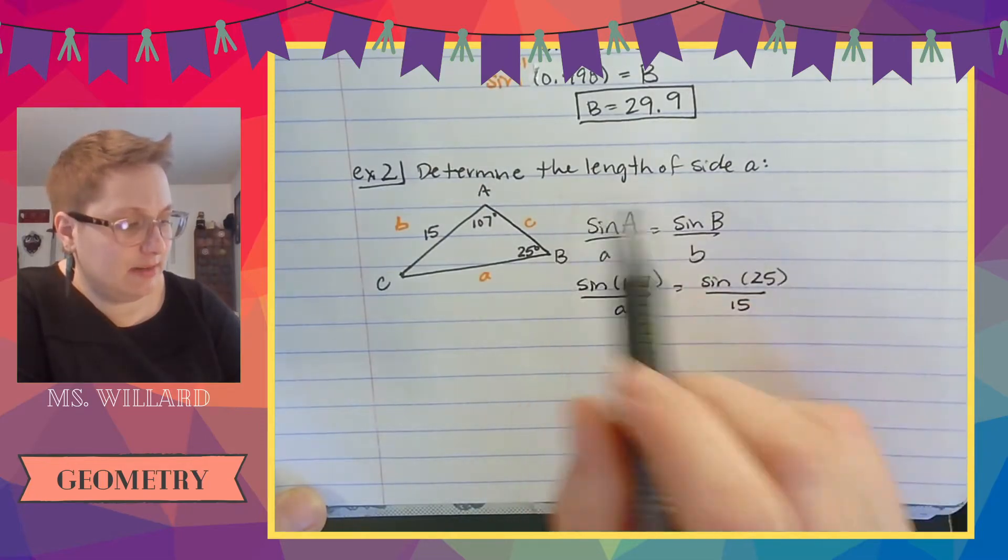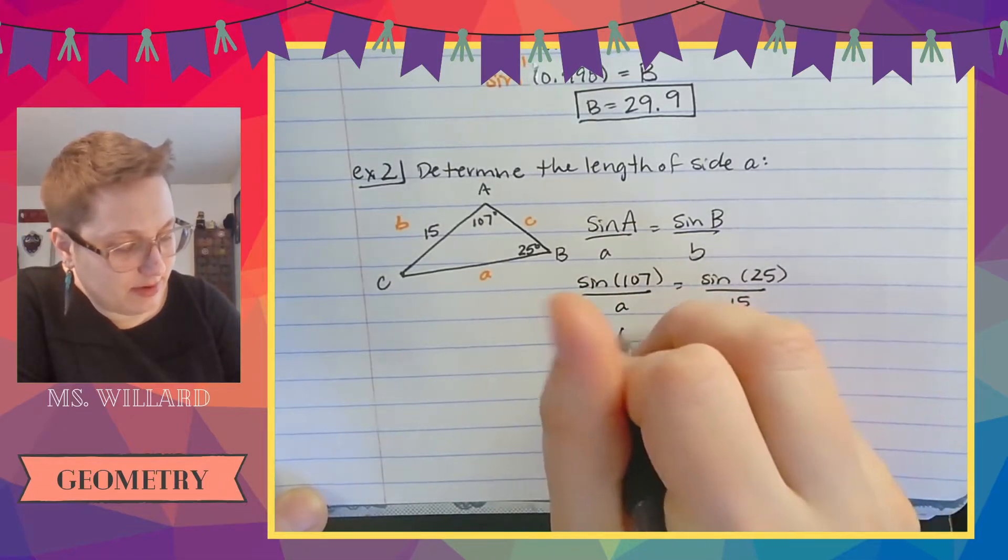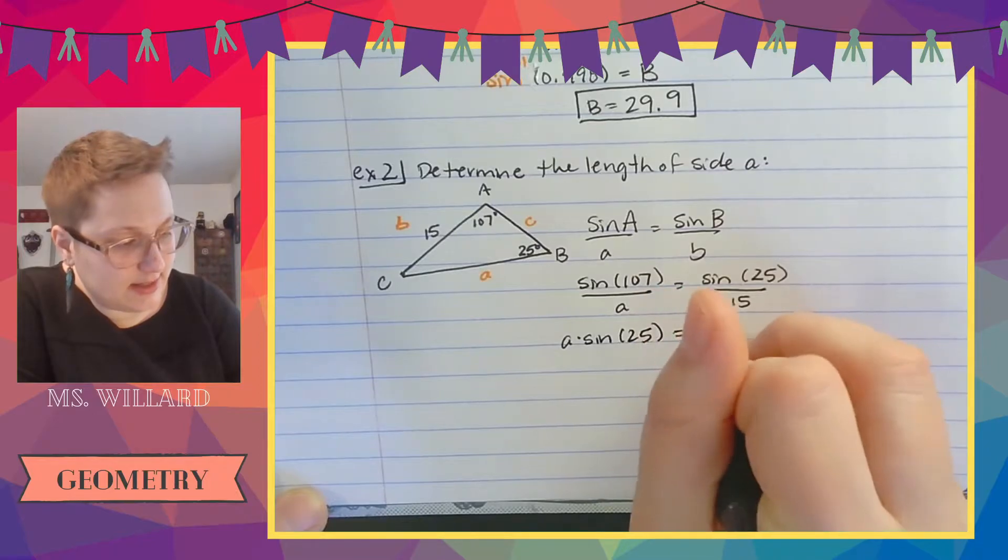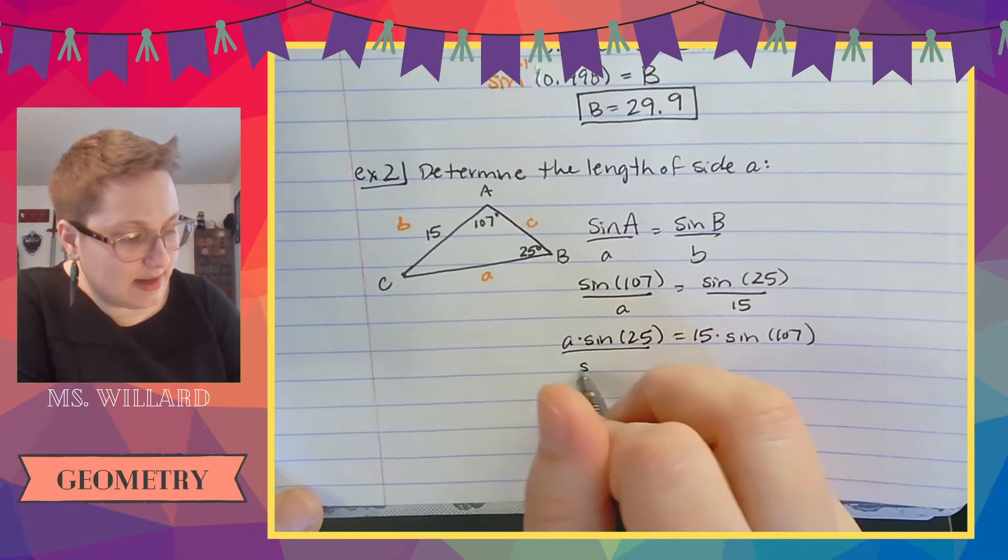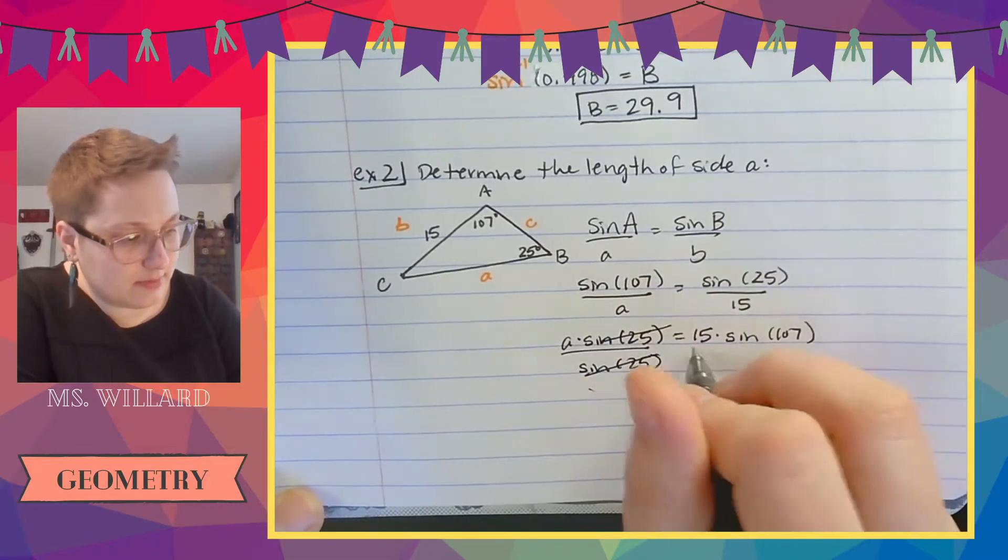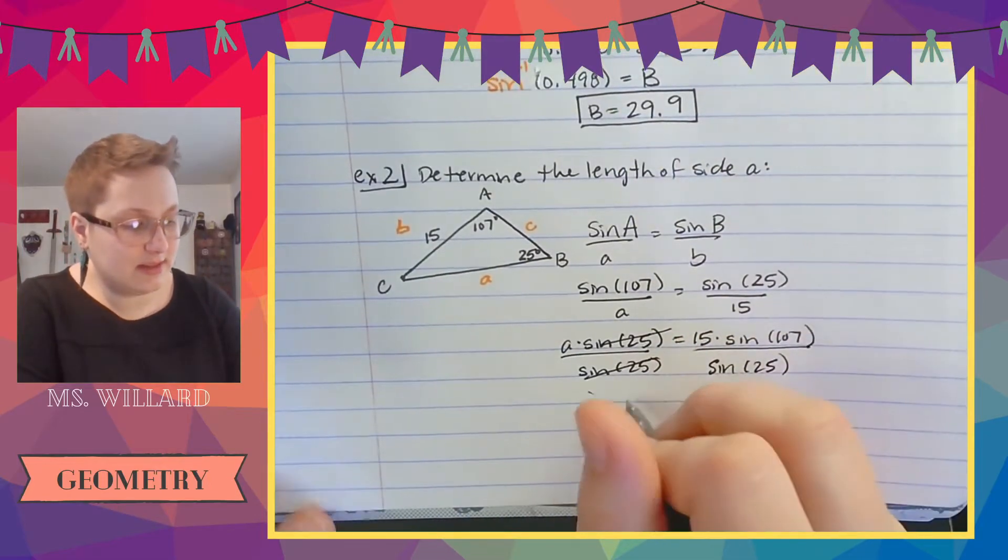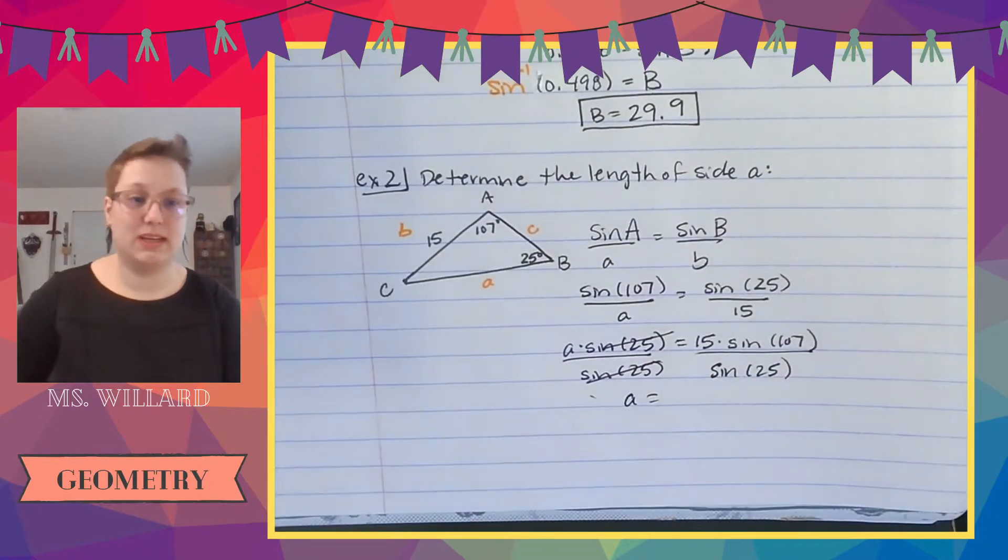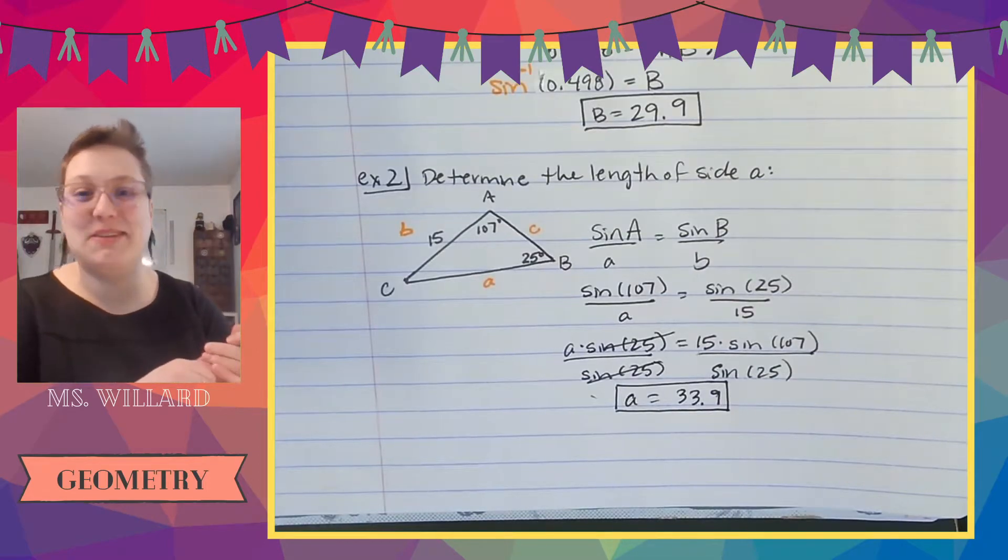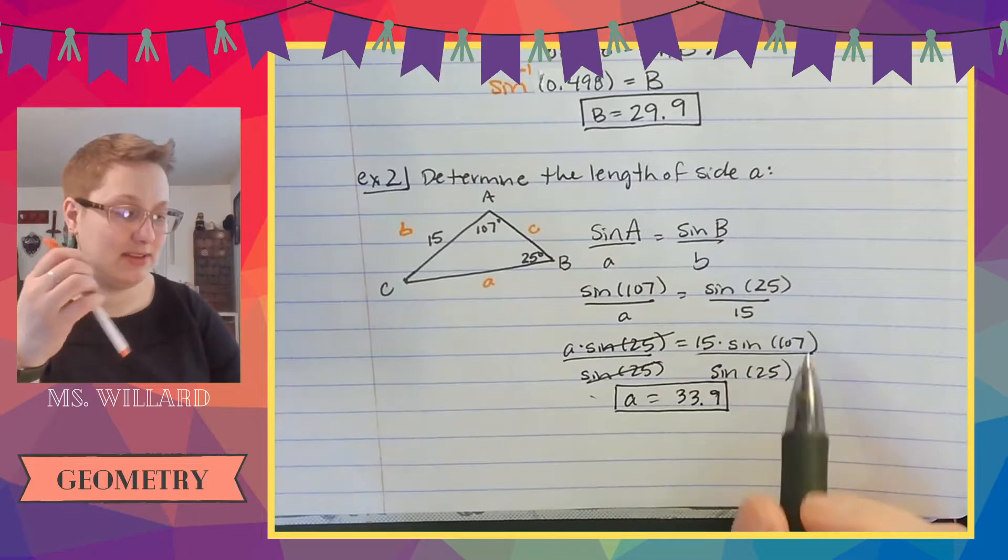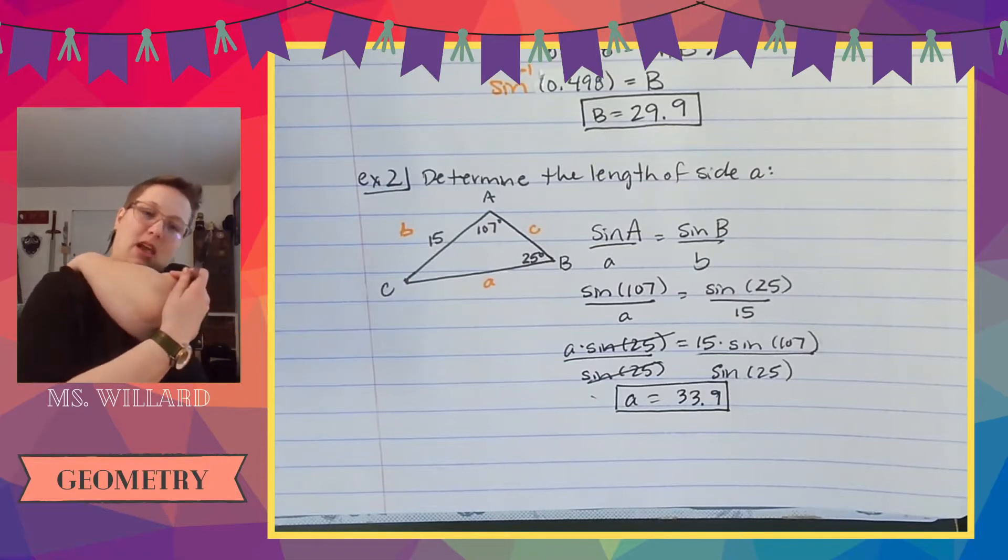And then we'll solve this. So I'm going to do the same thing I did before with cross multiplication. So it's a times sine of 25 equals 15 times sine of 107. And then I'm going to divide both of these sides by sine 25. I'm going to figure out what this is because a is going to equal whatever this whole thing is. Can I get 33.9? If you didn't get 33.9, make sure you're in degrees and make sure you have a lot of parentheses that you need. Every time you see a parentheses in here, do a parentheses in there. Also, you can press enter after all the math and it'll be fine.